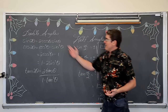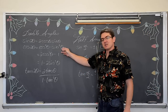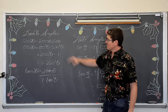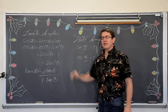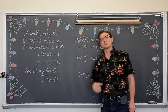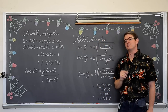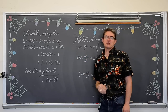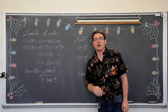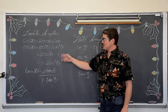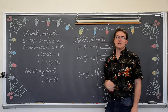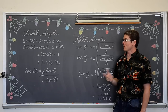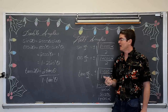We are going to have double angle identities for sine and cosine, and there are three choices. When you are evaluating trig functions, which we are going to do in the first video, it does not matter which of these three double angle identities for cosine that you use. They are all going to give you the same equivalent answer.